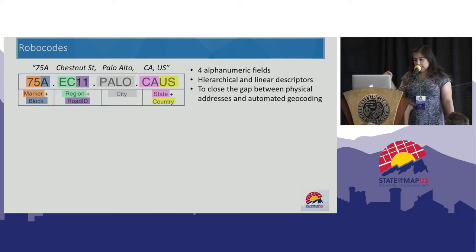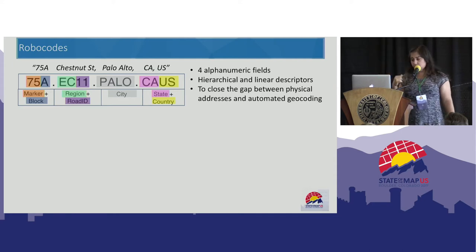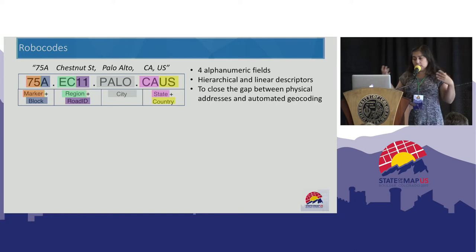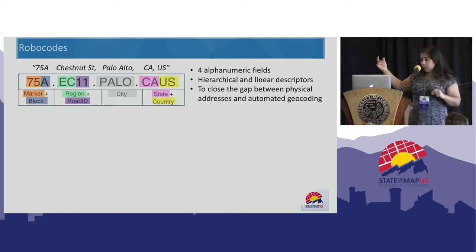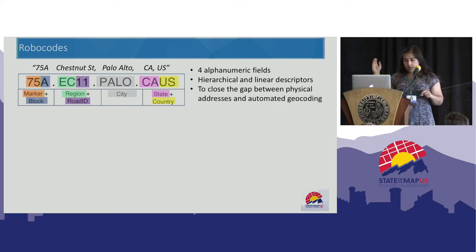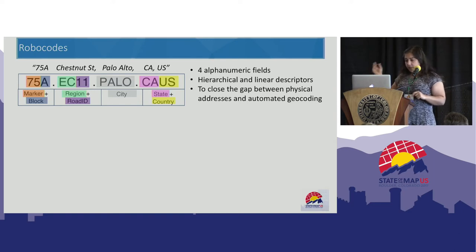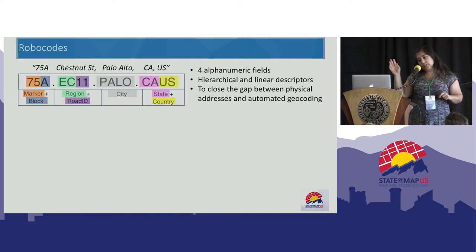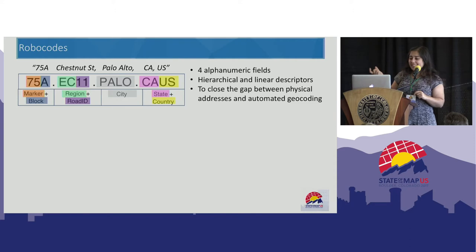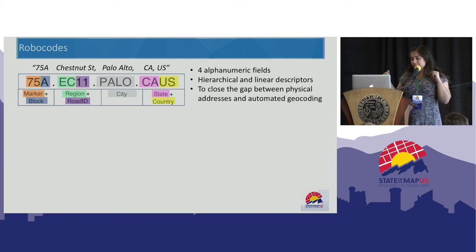Robocodes has four alphanumeric fields. They are all hierarchical and linear. We want to close the gap between physical addresses and automated geocoding. The last field is state and country information. The third field is the city abbreviation. The second field is the street name, which includes the region name and road number. The first field is the meter marker and the block offset.